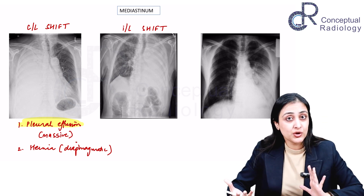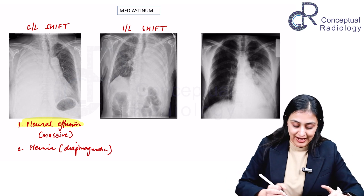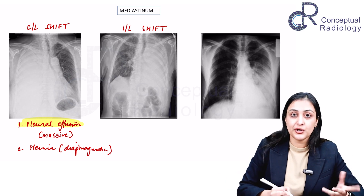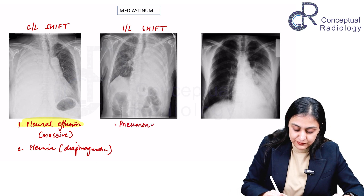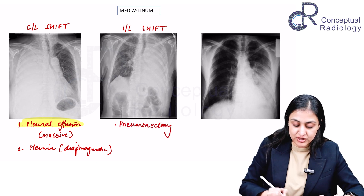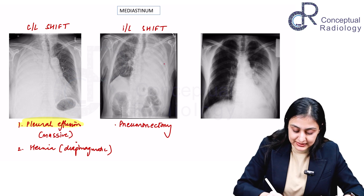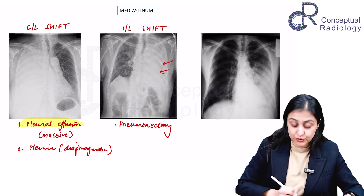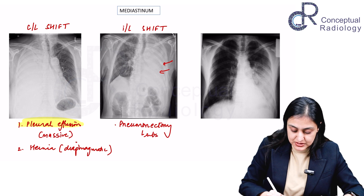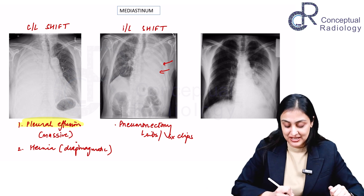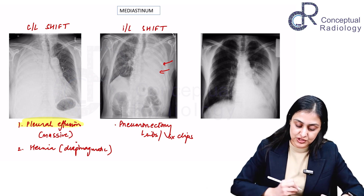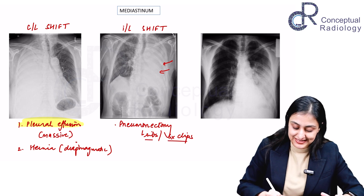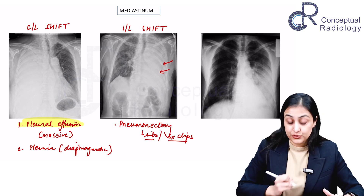Two things to consider: is it iatrogenic volume loss, or is it collapse? Iatrogenic volume loss — specifically pneumonectomy — can be ruled out from history. On the x-ray, look for removed ribs and surgical clips. You can also simply ask the patient. Ribs and surgical clips are your clues to rule out pneumonectomy.